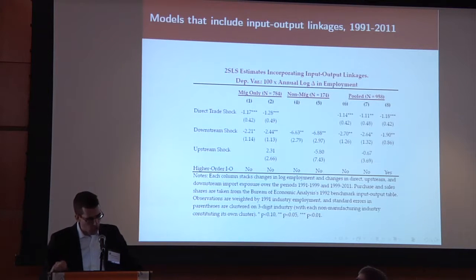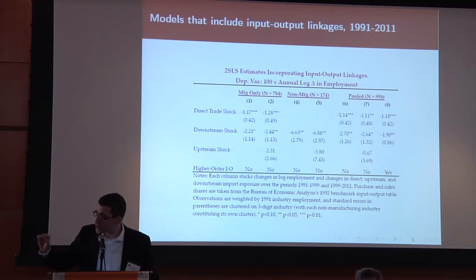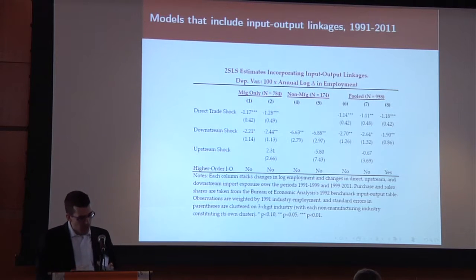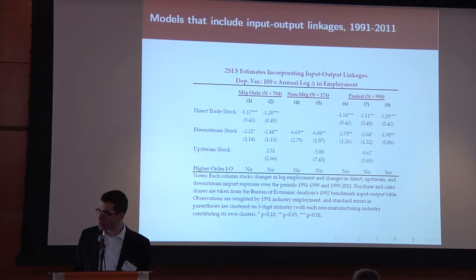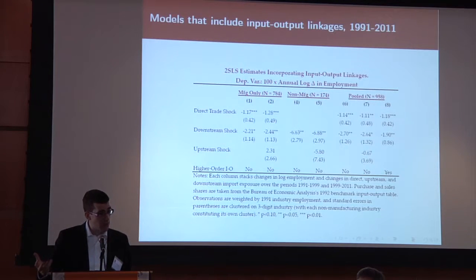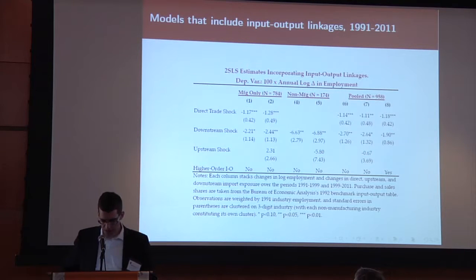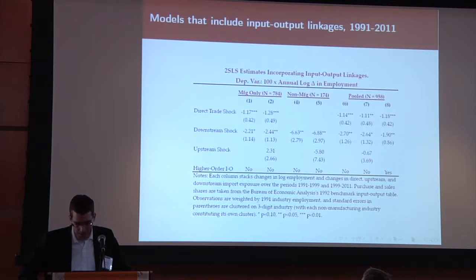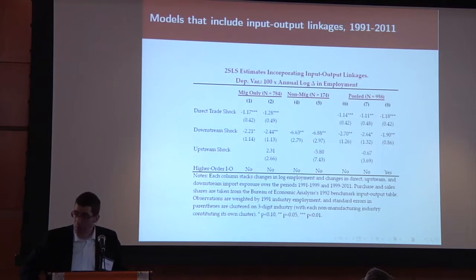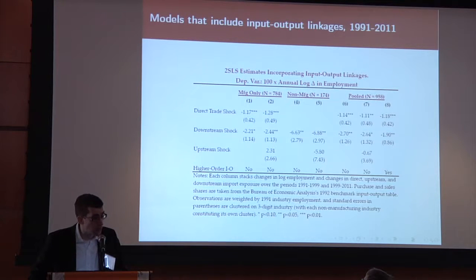Looking at the results, our outcome is the change in employment at the level of an industry. We now allow three different impacts: one coming through the direct trade exposure of those industries, one through the exposure of their customers, and one through the exposure of their suppliers. What we see is that if one sells to trade-exposed customers that themselves are under import competition pressure, this also has negative impact effects, both for manufacturing industries and for non-manufacturing industries that do the same.